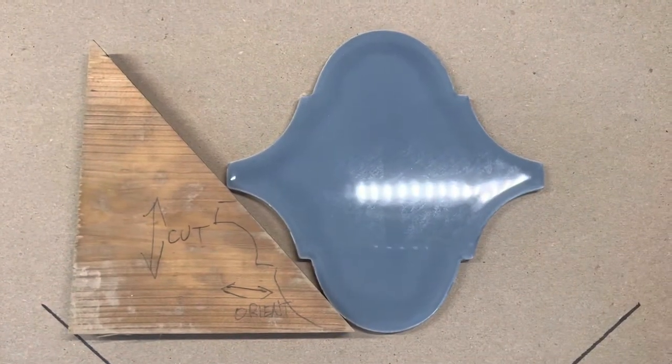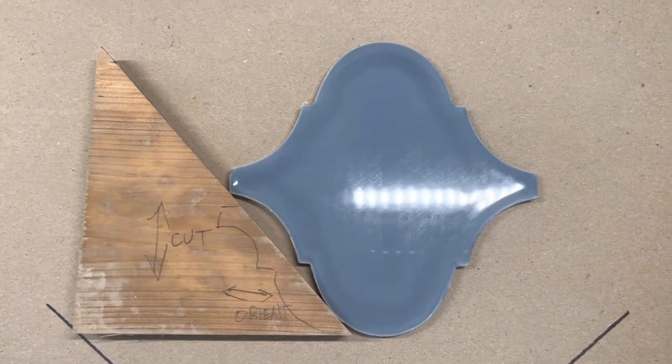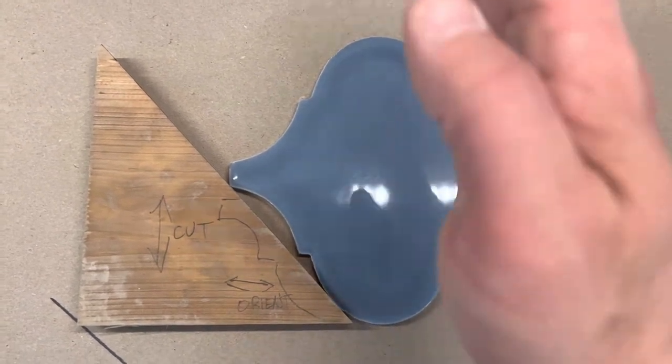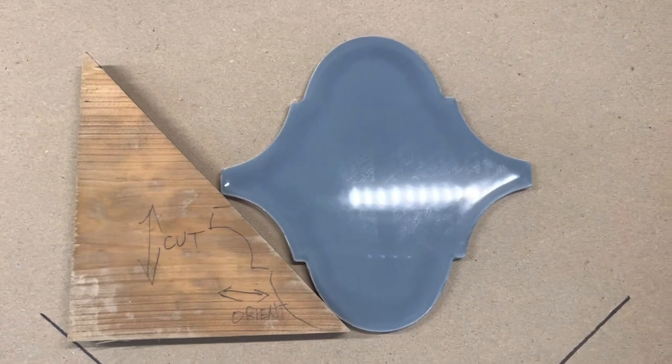Here you can see the alignment for a horizontal cut. Just flip the triangle, run it through the saw, and get a perfect 90 degree angle.